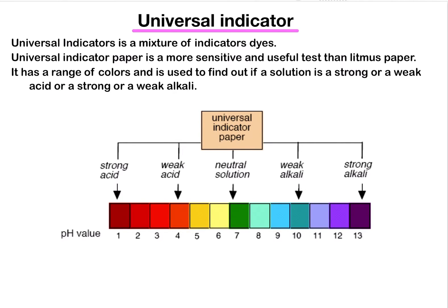Universal indicator paper is a more sensitive and useful test than litmus paper. It has a range of colors and is used to find out if a solution is a strong or weak acid, or a strong or weak alkali. Towards the left-hand side we have strong acid, which is reddish in color. A pH of four is a weak acid. Neutral substances like pure water appear green at pH seven. Weak alkali is around pH ten and strong alkali is around pH thirteen.